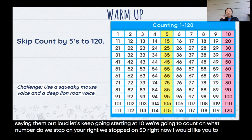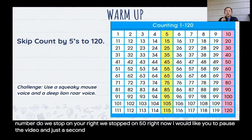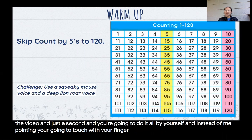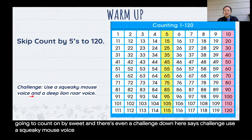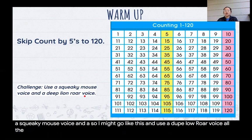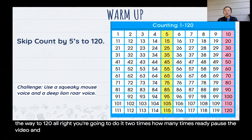Right now, I would like you to pause the video in just a second and you're going to do it all by yourself. And instead of me pointing, you're going to touch with your finger and you're going to count on by fives. And there's even a challenge down here. It says challenge: use a squeaky mouse voice. And so I might go like this: 5, 10, 15, 20, 25, 30. And use a deep lion roar voice all the way to 120. You're going to do it two times. Pause the video and go ahead and do it.